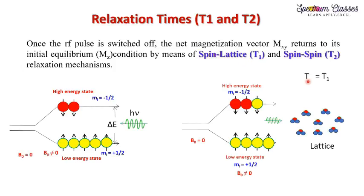A trick for students who forget which is T1 and which is T2: here is the word 'lattice', and if we write the letter L in a certain way, it relates to T1. So T1 is spin-lattice relaxation — here is the spin and this is the lattice.